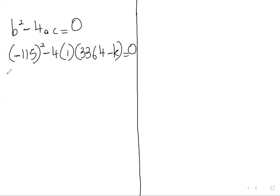So minus 115 square is 13225, then minus 4 into 1, which is minus 4, into 3364. So minus 4 into 3364 is minus 13456. Minus 4 into minus k is plus 4k, equal to zero.